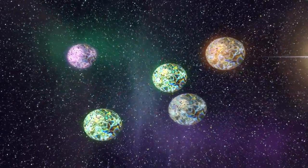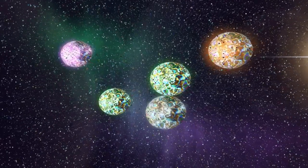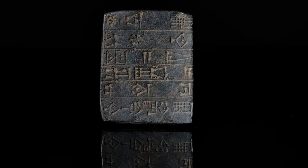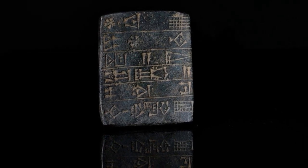One area where Sumerian texts hint at advanced knowledge is in the field of astronomy and celestial observations. For example, Sumerian clay tablets contain detailed astronomical records, including observations of planetary movements,